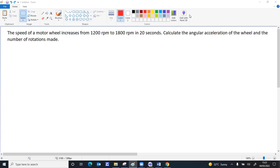In this question, the initial angular speed of a motor wheel is given as 1200 rpm. It changes to finally 1800 rpm, and the time interval is 20 seconds.